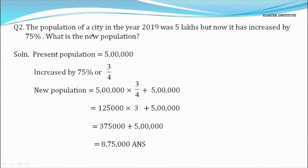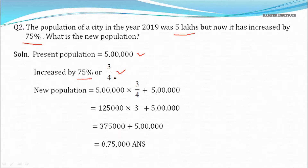Question 2: The population of a city in 2019 was 5 lakh. It has increased by 75%. What is the new population? We convert 75% to a fraction — referring to the table it equals 3/4. So there has been an increase of 3/4 of the present population. We find 3/4 of 5 lakh and add it to the original population.